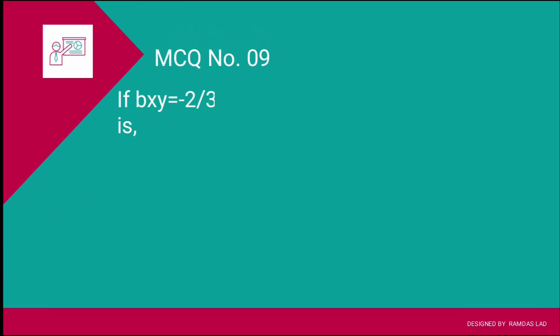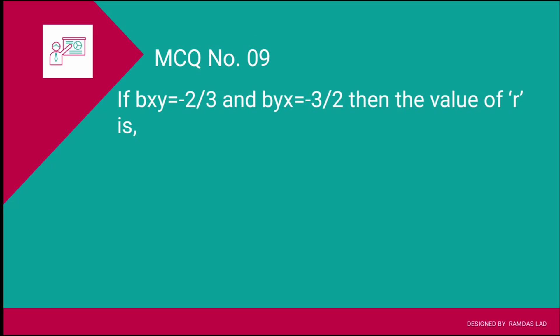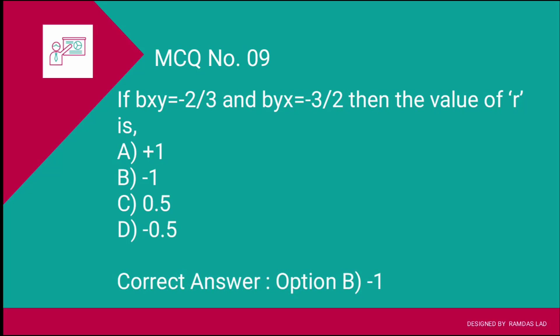Question number nine: If Bxy equals minus 2/3 and Byx equals minus 3/2, then the value of R is? Options are: A) plus 1, B) minus 1, C) 0.5, D) minus 0.5. Using the property of regression coefficients: R² = Bxy × Byx. Multiply minus 2/3 by minus 3/2 to get R² = 1, so R = minus 1 (since both regression coefficients are negative). The correct answer is option B — minus 1.